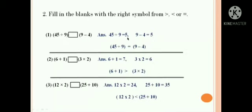Let us see the second question. Fill in the blanks with the right symbol, greater, smaller, or equal. The first question: 45 divided by 9 and another side is 9 minus 4. When you divide 45 by 9, you get 5. When you subtract 9 minus 4, you get 5. So the sign will be equal.